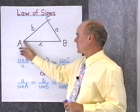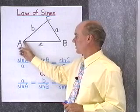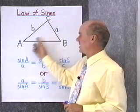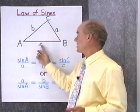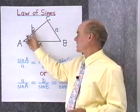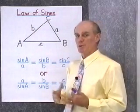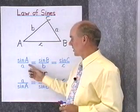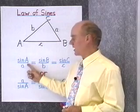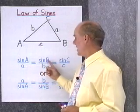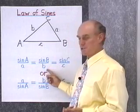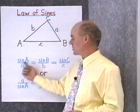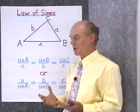Remember how we label triangles. The vertices or angles are written with capital letters A, B, and C, and side a is opposite angle A, side c is opposite angle C, and side b is opposite angle B. The relationship between the angles and sides in any triangle is: sine of angle A is to side a, as sine of angle B is to side b, as sine of angle C is to side c. These three ratios are always equal in any triangle.